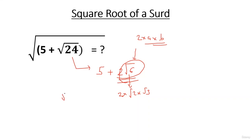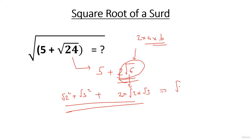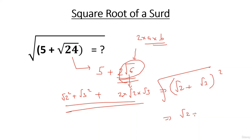So 5 + 2√6 becomes (√2)² + (√3)² + 2×√2×√3, which matches the expansion a² + b² + 2ab. This is clearly the expansion of (√2 + √3)². Therefore, the square root of 5 + 2√6 equals √2 + √3.